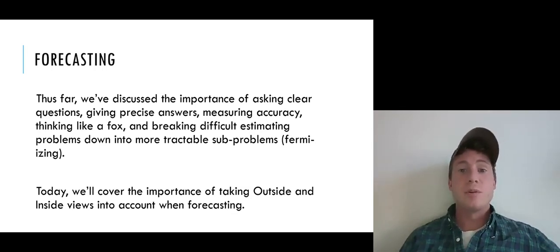So far we've discussed the importance of asking clear questions, giving precise answers for probabilistic estimates or intervals of probabilities, measuring our accuracy, thinking like a fox as thinking from different standpoints, taking different viewpoints into account when making a forecast, and breaking difficult estimating problems down into more tractable sub-problems like Enrico Fermi, the physicist did. Today we'll cover the importance of taking outside and inside views into account when forecasting. This is an aspect of thinking like a fox, taking different viewpoints into account when coming up with a forecast.